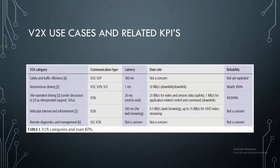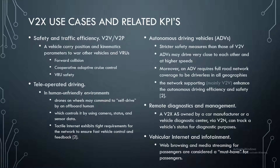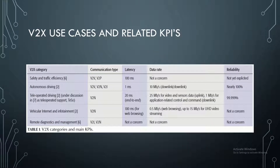Autonomous driving vehicles (ADVs) have stricter safety measures than V2V because not only do they drive fast and close to each other, but also require full road network coverage. V2V networks enhance this form of service. For remote diagnostics and management, a V2X app server via V2N can track a vehicle's status for diagnosis, where quality of service requirements are relaxed. For infotainment, web browsing and media streaming for passengers are considered a must-have.